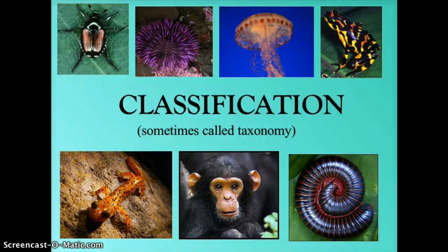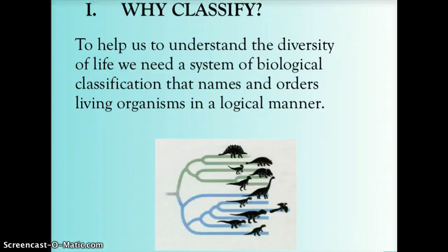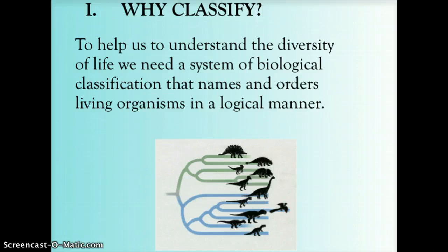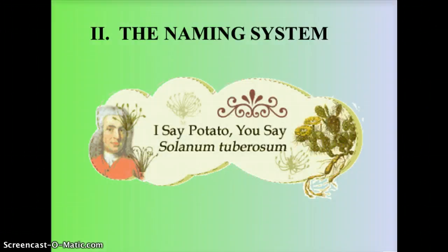The science of classification is also called taxonomy. We classify in order to organize — we need an organized system of biological classification to provide the names and orders of living things, so that we can do this in a logical manner, and no matter who's speaking to each other, they can communicate and are talking about the same things in the same way.